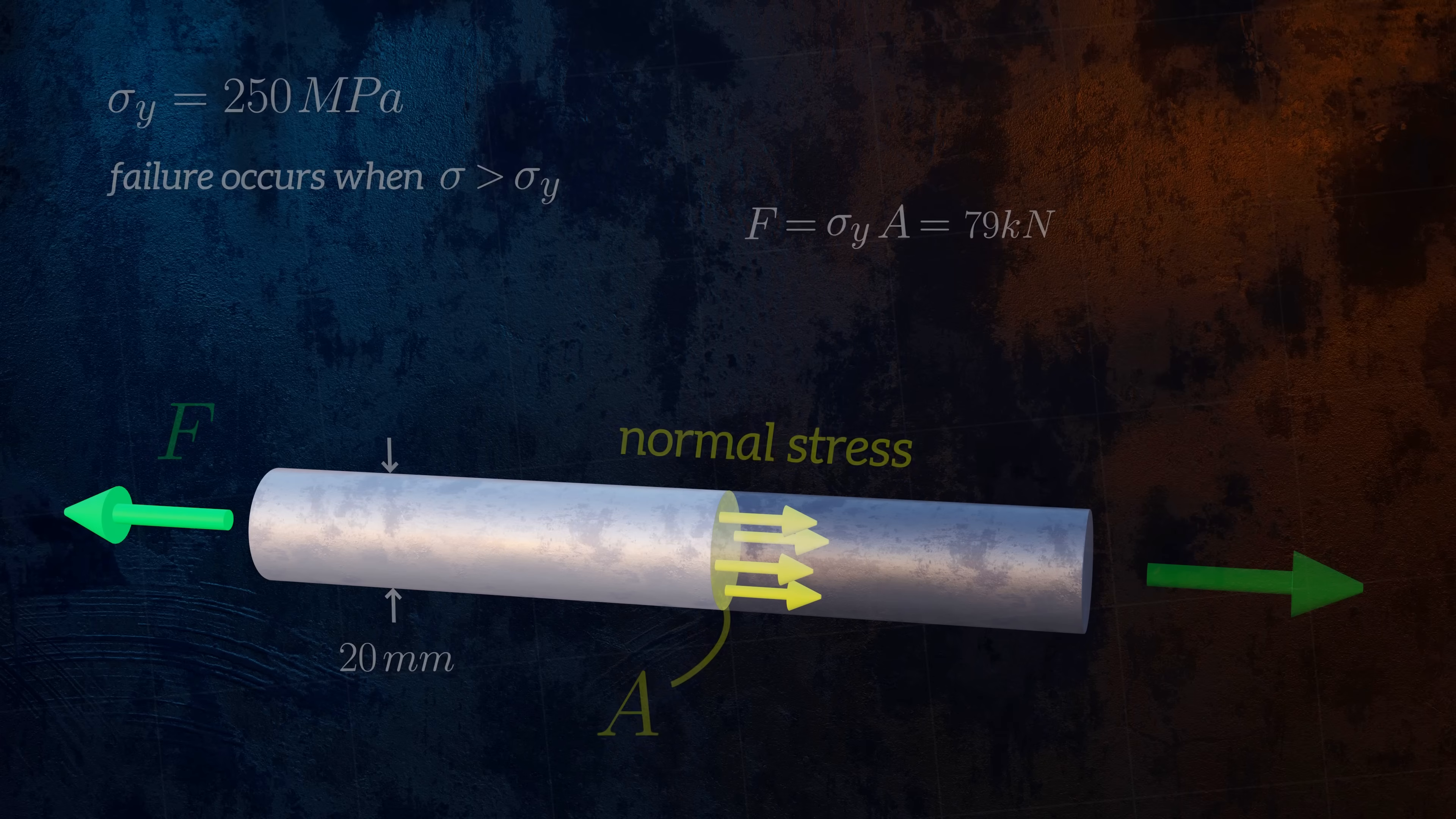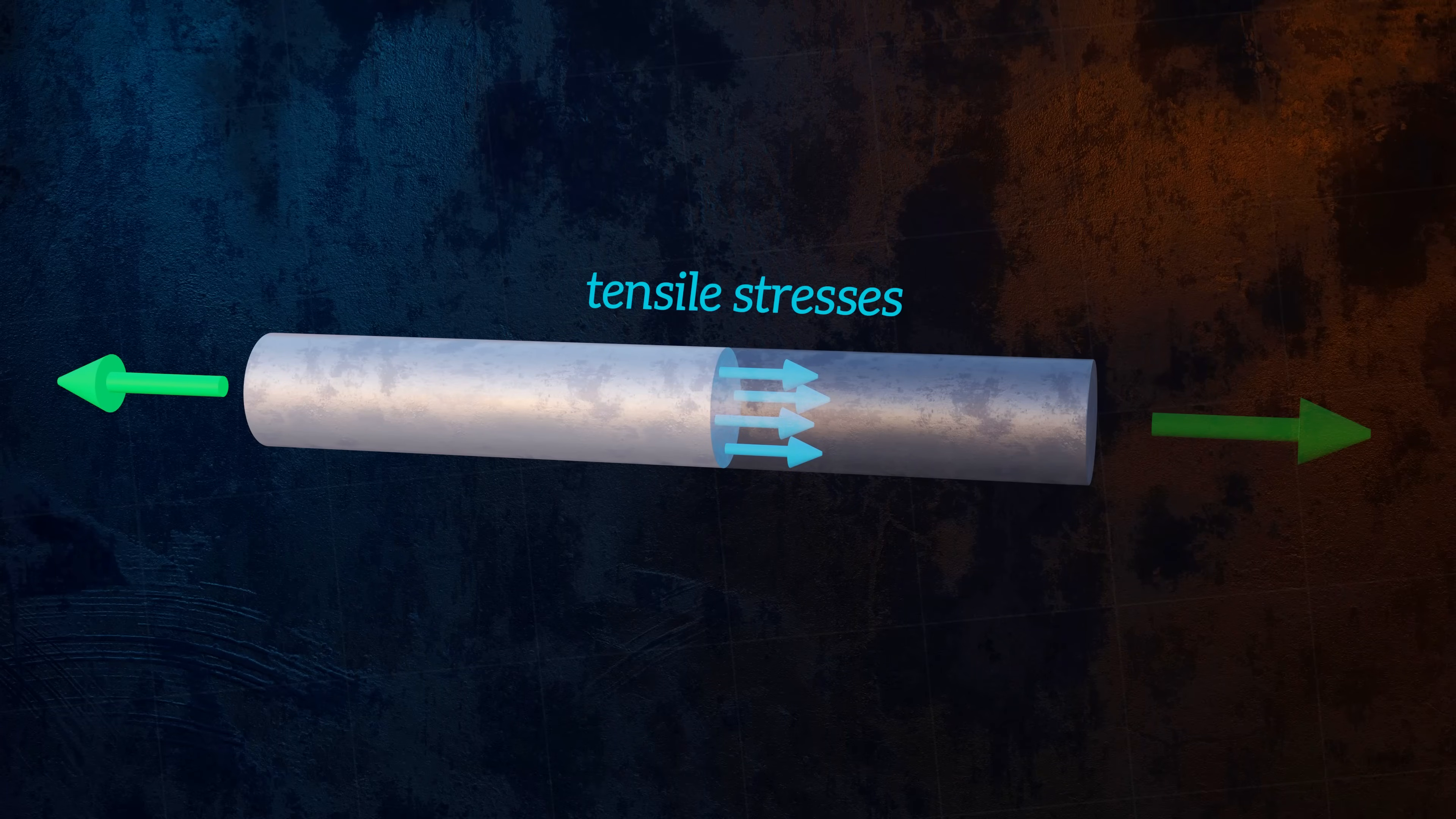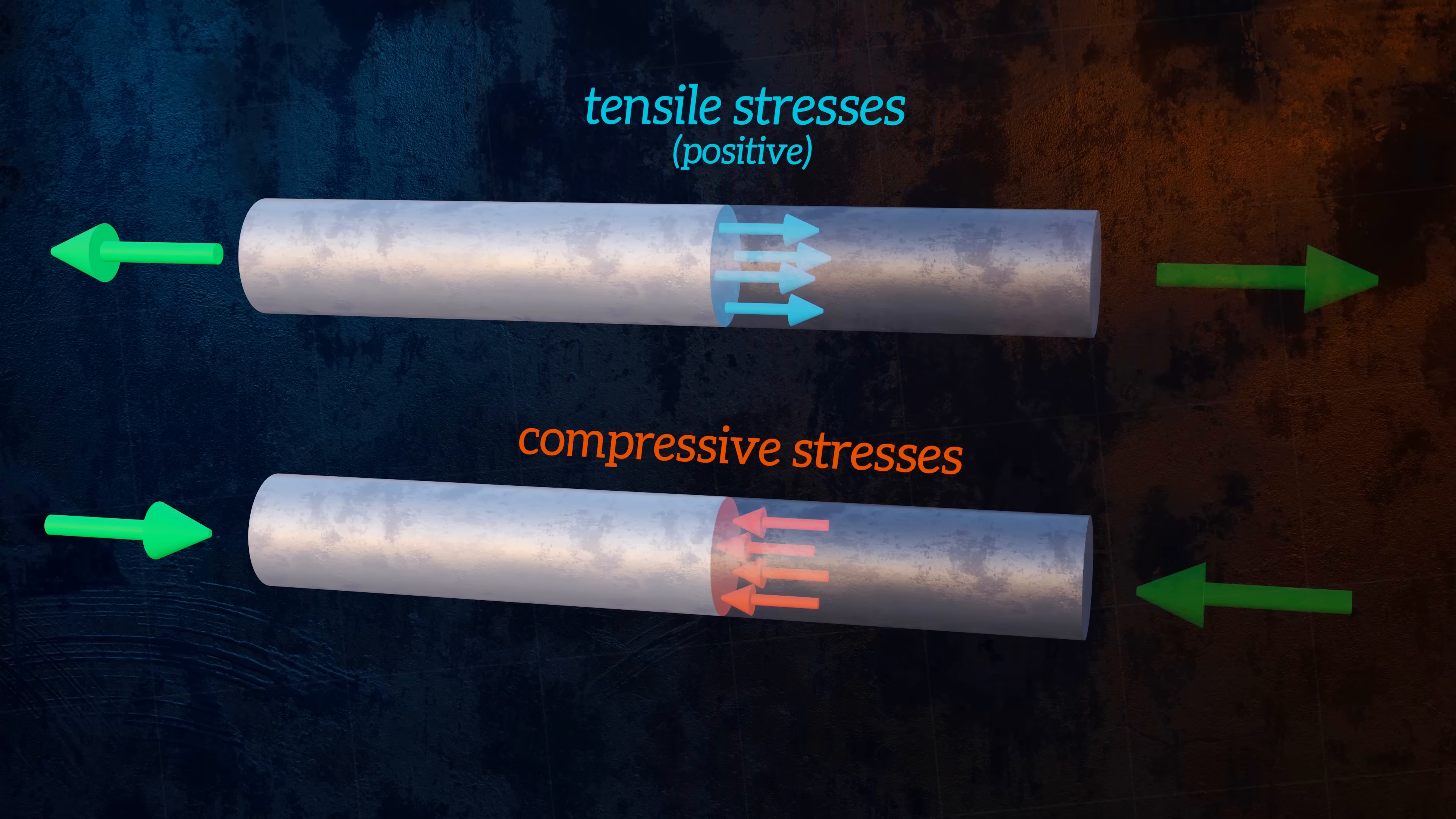Normal stress can be either tensile or compressive. In this case, the stress is tensile because the forces are stretching the bar. If the forces were trying to shorten the bar, we would have a compressive stress. The sign convention that is normally used is that tensile stresses are positive values and compressive stresses are negative values.